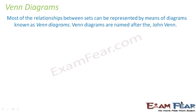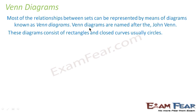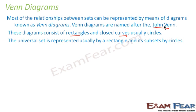Most relationships between sets can be represented by means of Venn Diagrams. These are diagrams with rectangles and closed curves, named after John Venn. The universal set is represented usually by a rectangle and its subsets by circles.